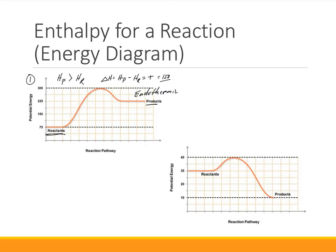Energy must have come from the surroundings into the system. Similarly, in the second graph, the energy content of the reactants is higher than the products, so H_products is less than H_reactants. That means ΔH equals H_products minus H_reactants, which is a negative quantity — in fact, negative 20 according to the numbers on the graph. Therefore, this must be exothermic.